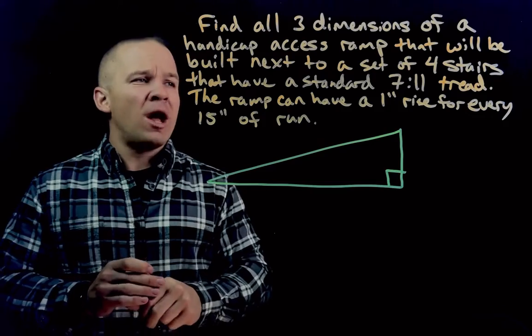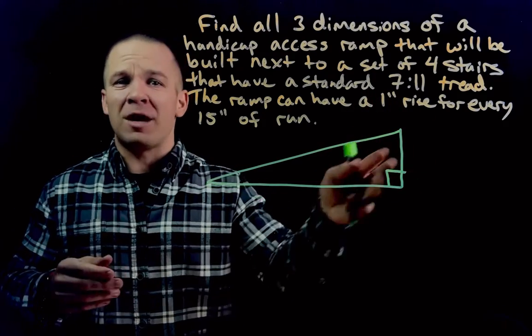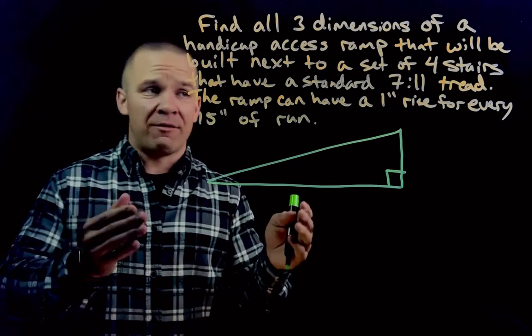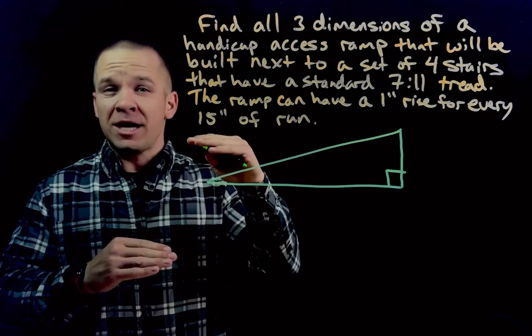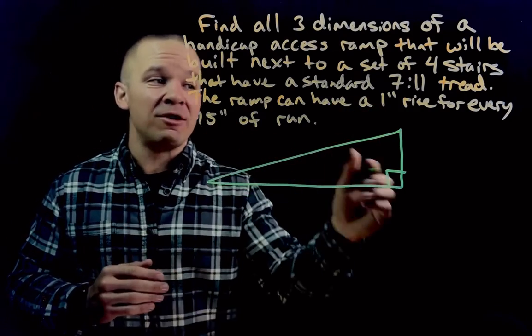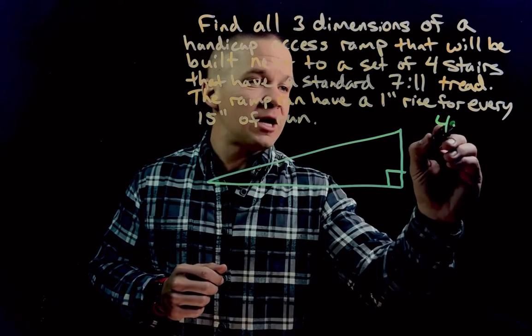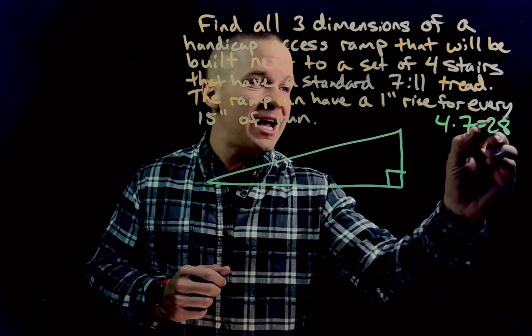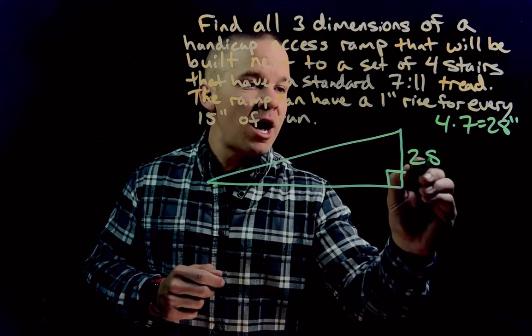Now can we get any dimensions here? Well, I've got four stairs and they have a 7-11 tread, meaning the rise and run are 7 and 11 respectively. If I got four stairs, I'm going to have to go to that same level. So I'm going to have four rises at seven apiece. Four times seven gives me 28 inches. So that's going to be my height of this ramp.